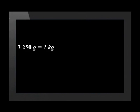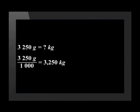Let's do a conversion problem. We need to convert three thousand two hundred and fifty grams to kilograms. To convert a mass given in grams into kilograms, we take the number of grams and divide by one thousand. Three thousand two hundred and fifty divided by one thousand equals 3.25 kilograms.